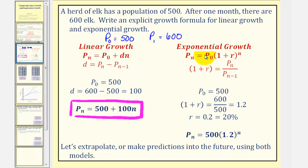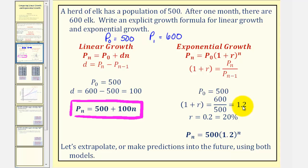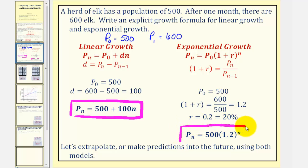For exponential growth, we have p sub n equals p sub zero times the quantity one plus r raised to the power of n. We'll begin by determining the growth multiplier, which is one plus r, using this formula here. If n is one, we have p sub one divided by p sub zero, which would be six hundred divided by five hundred, which gives us one point two. Notice how if the growth multiplier is one point two, we should recognize that r would be point two. Therefore, the growth rate would be twenty percent each time period. So the exponential growth equation would be p sub n equals five hundred times one point two raised to the power of n.